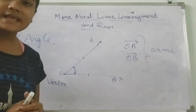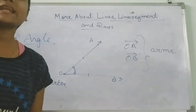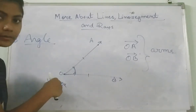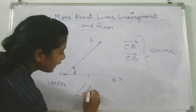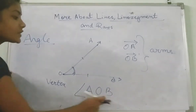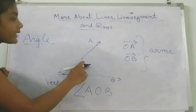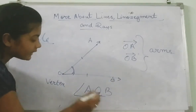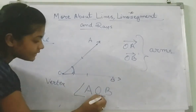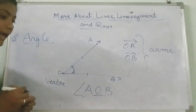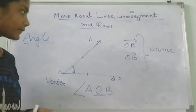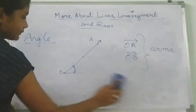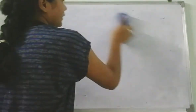Now, how do we name this angle? For naming an angle, remember we use three letters, and the vertex is always in the center. This angle is named angle AOB — this is the symbol of angle. We use three letters, and the vertex is always at the center. When two rays or line segments meet at a point, an angle is formed. I hope you all understood.